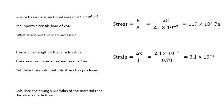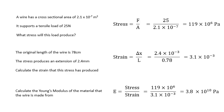Calculate the Young's modulus of the material the wire is made from. We know the stress and the strain, so Young's modulus is stress divided by strain. Substituting the numbers gives 38 × 10¹⁰ pascal, or 38 gigapascal.